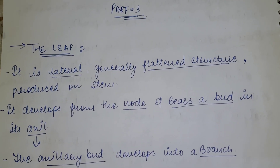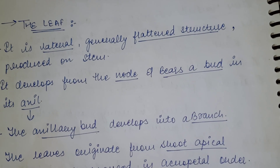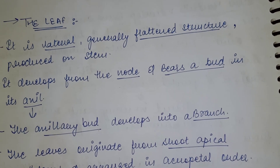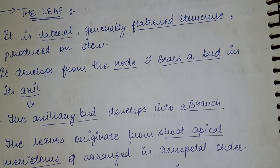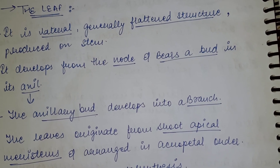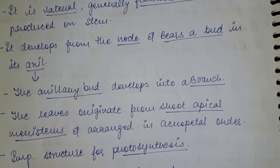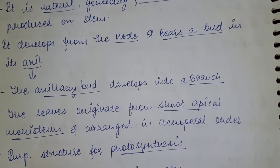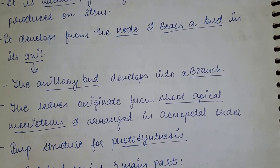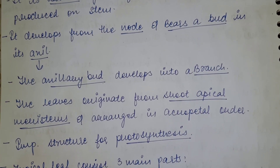The leaf is a lateral structure which is generally a flattened one. It is produced on the stem and develops from the node. In the axil corner there is a bud present, which we call the axillary bud, which develops into a branch. So on the stem, the leaf is present, and from the axillary bud a branch develops with time.